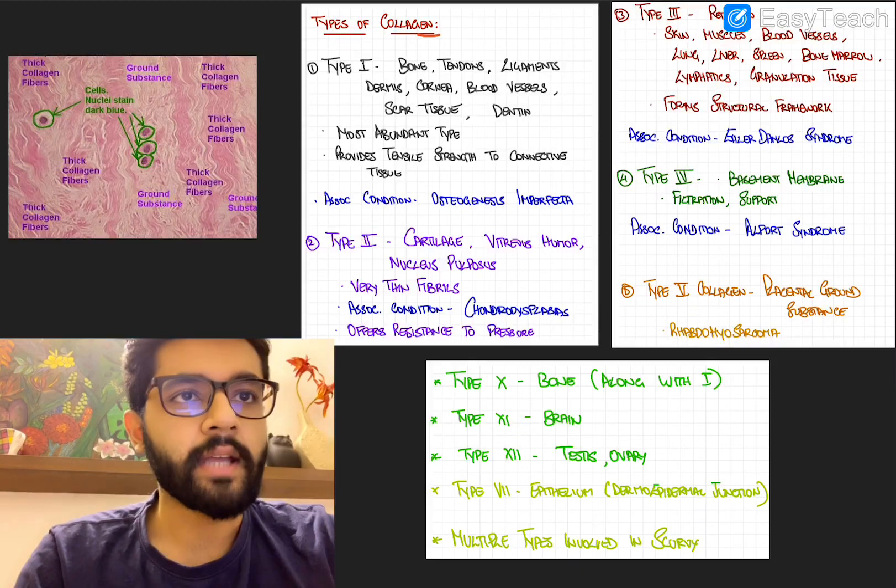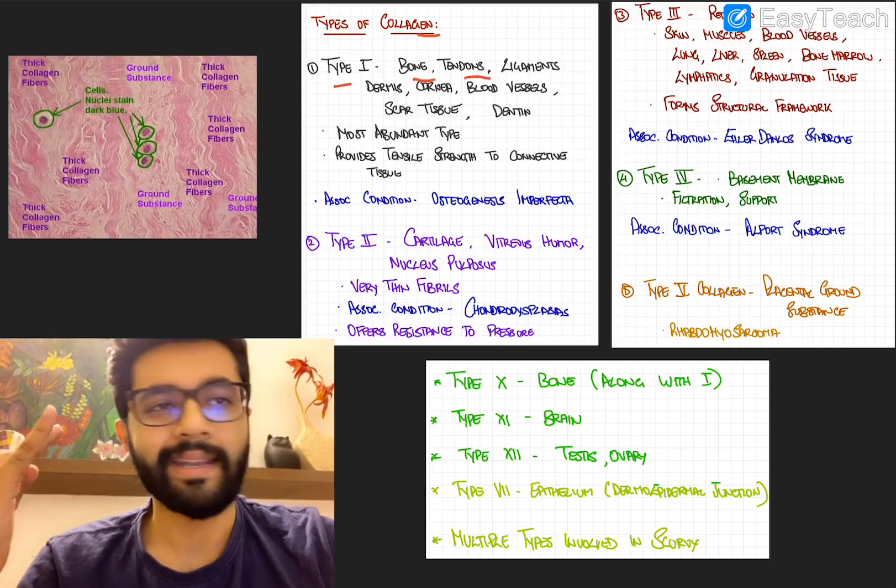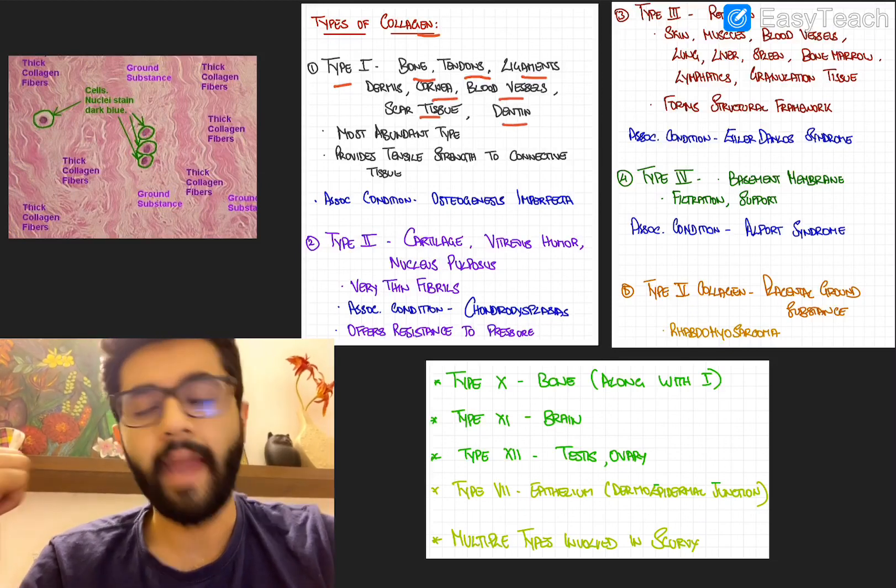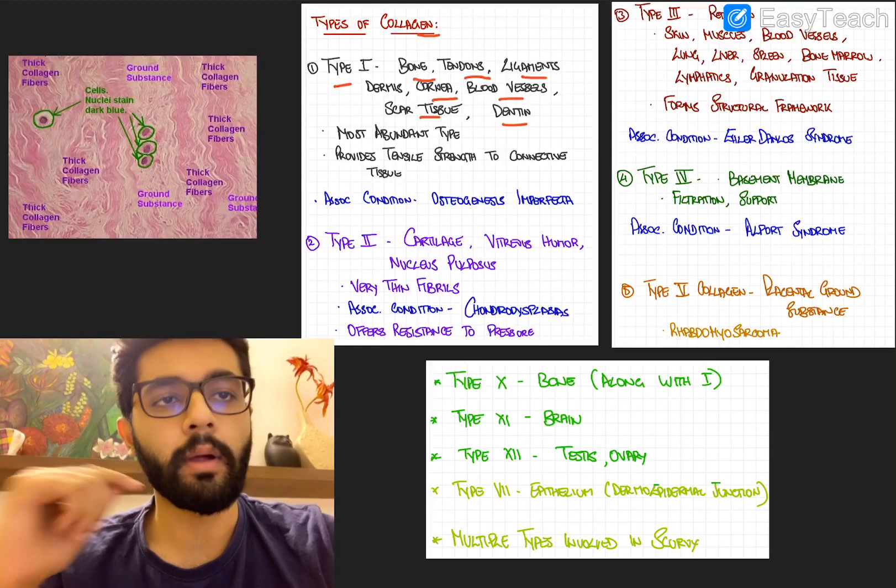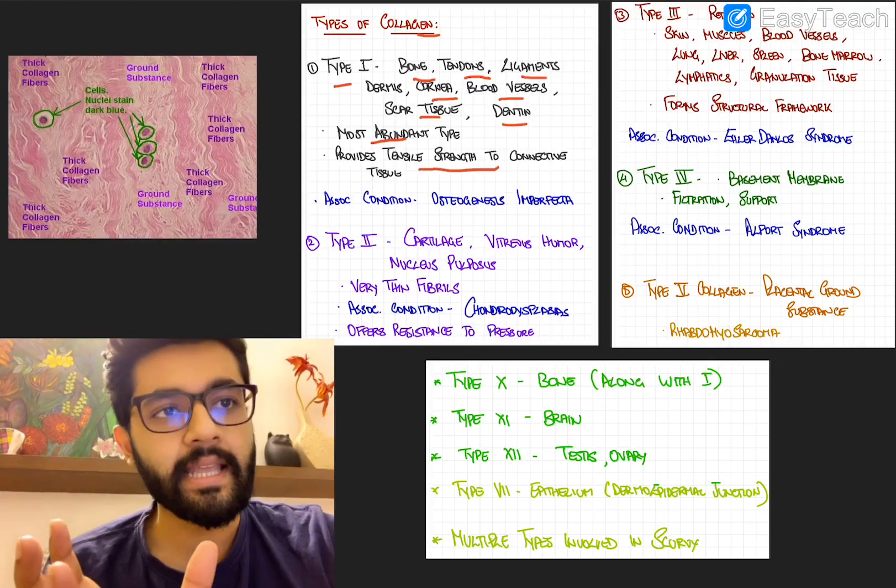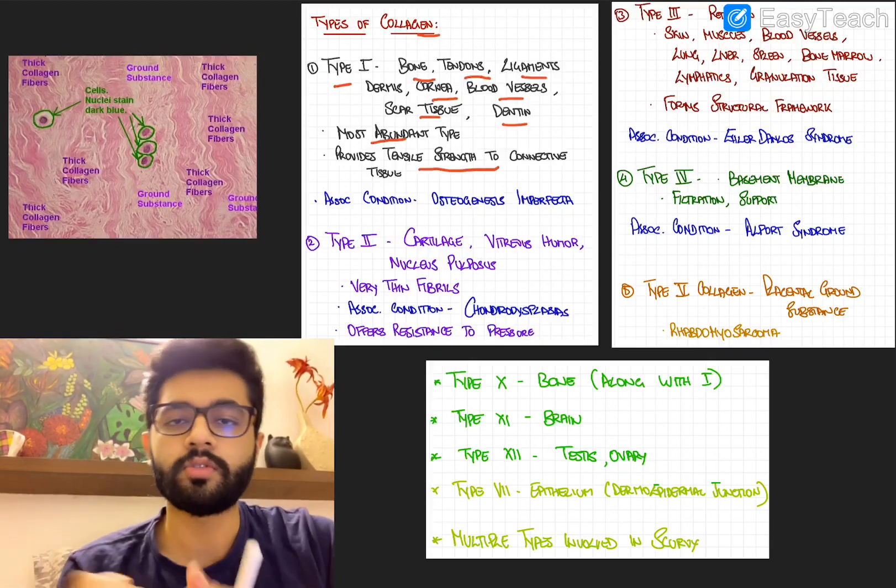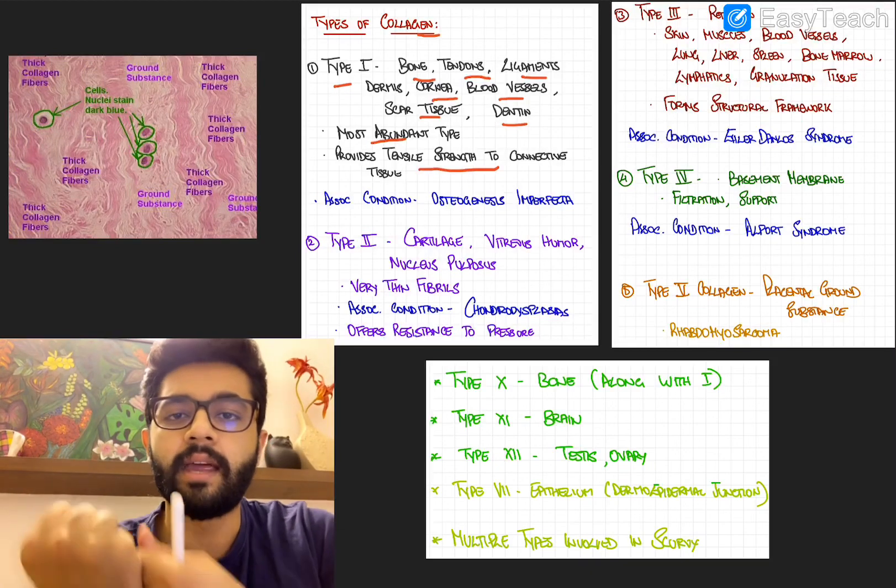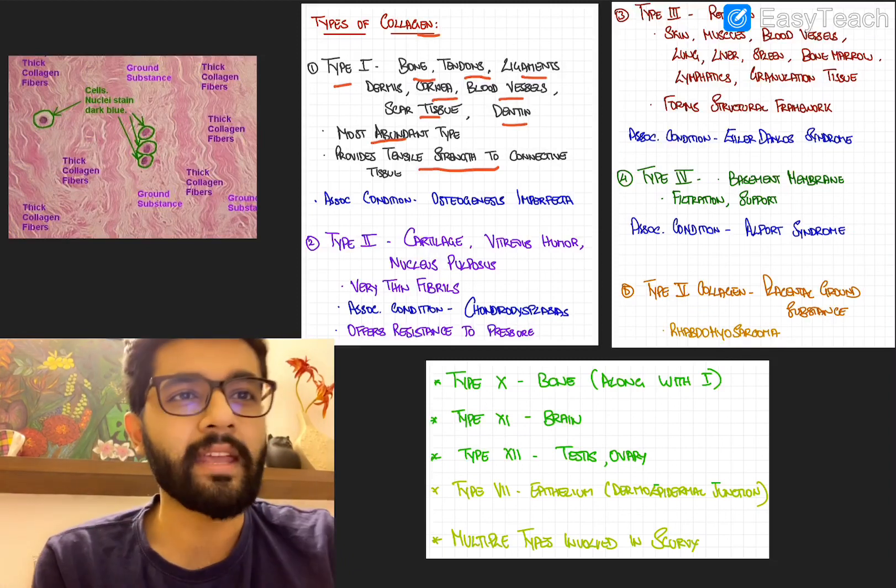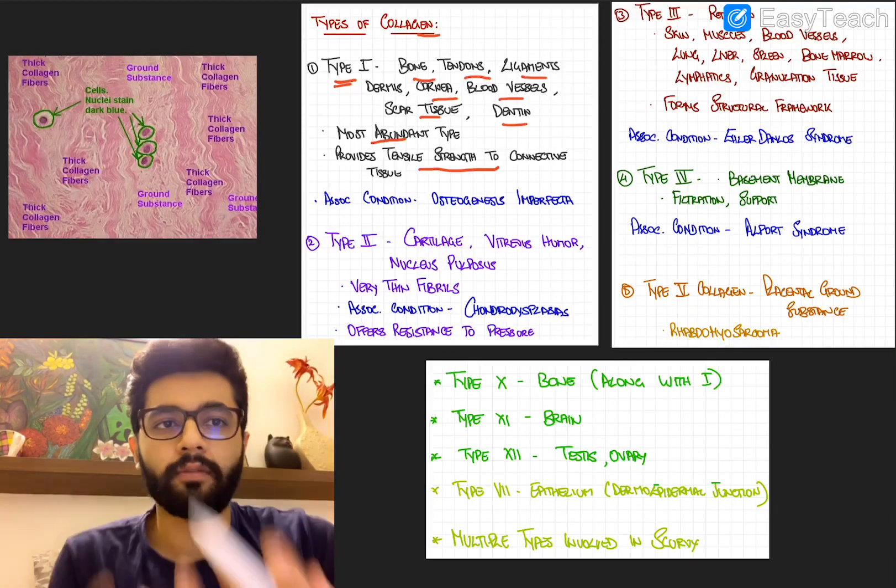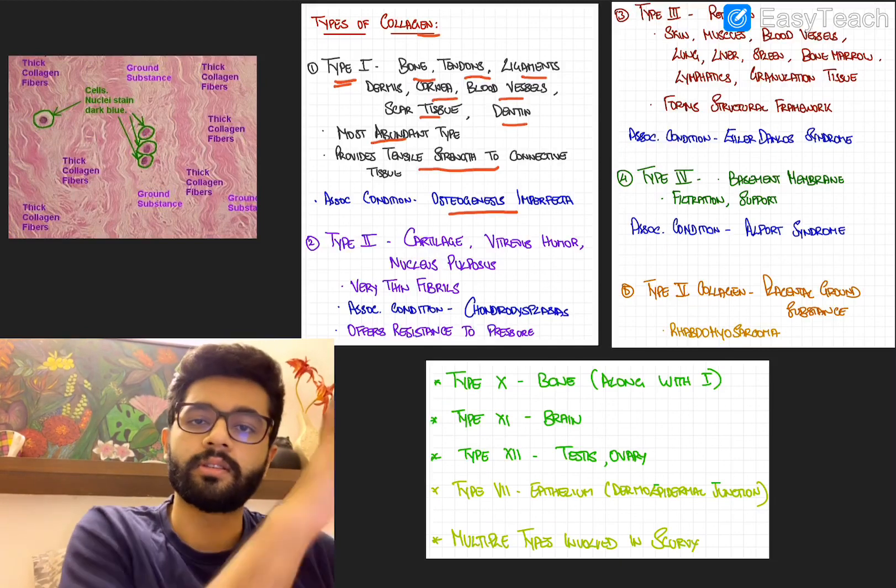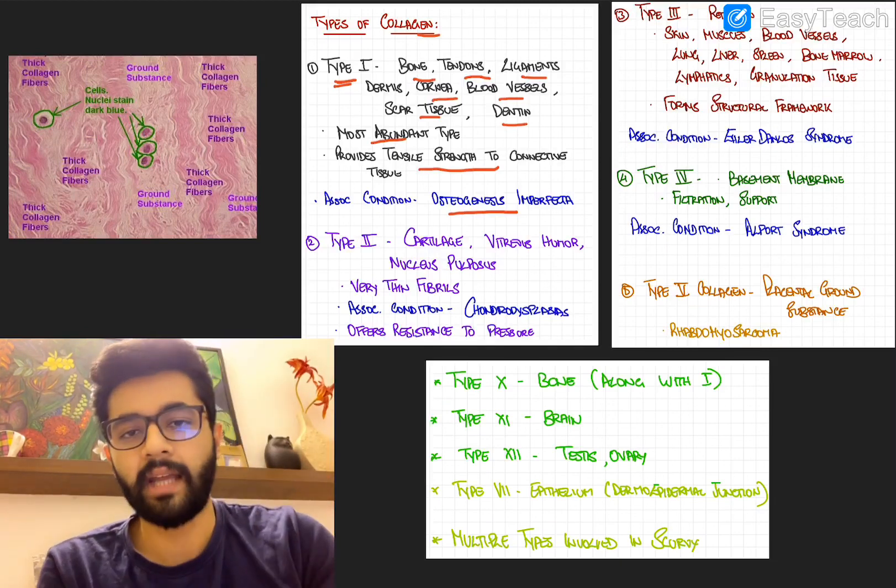So firstly, type 1 collagen is mainly found in bones, tendons, ligaments, the dermis of the skin, cornea, blood vessels, scar tissue, and also in dentin. Remember, type 1 is the most abundant type of collagen and it provides tensile strength to the connective tissue. So it offers the tissue some strength or resistance against tension. If there is some defect in synthesis of type 1 collagen, it's associated with a condition called osteogenesis imperfecta.